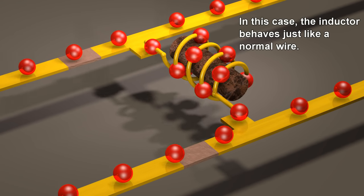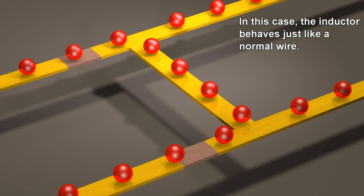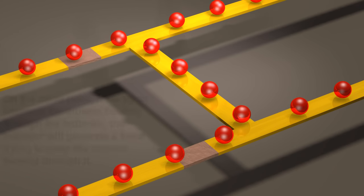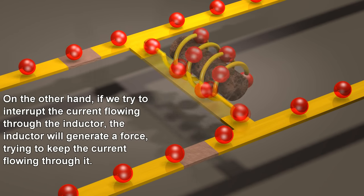In this case, the inductor behaves just like a normal wire. On the other hand, if we try to interrupt the current flowing through the inductor, the inductor will generate a force, trying to keep the current flowing through it.